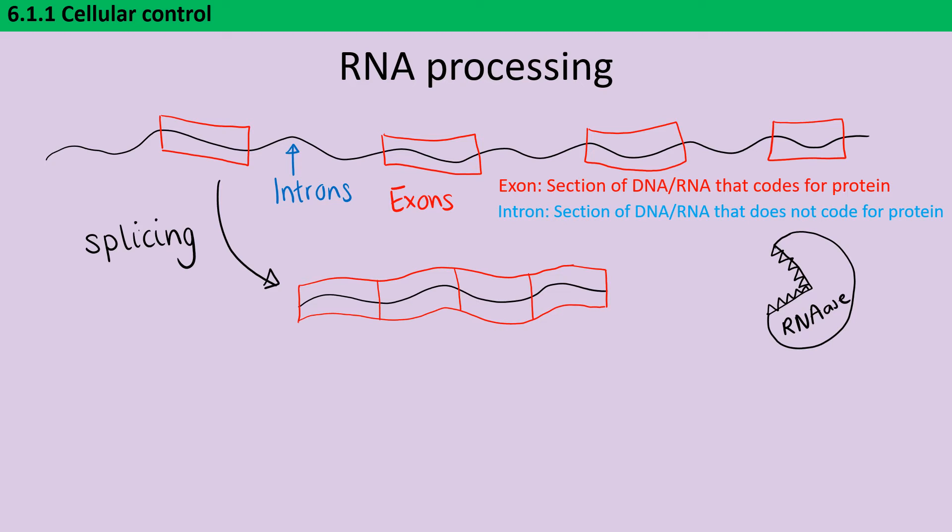So RNases and DNases exist to break down these nucleic acids where they find them. So there are two things that the cell does to protect the mRNA. The first one is to add what we call a poly-A tail. So this is literally a string of a lot of adenine nucleotides.